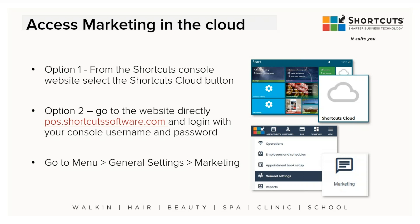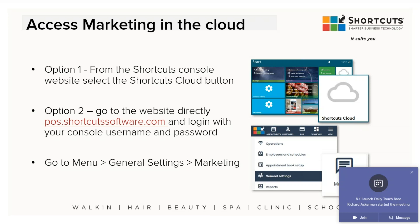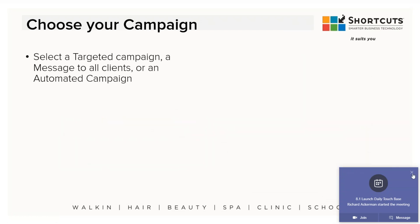There are two ways to get to the cloud. From the Console itself, on the right side, there's a button that says Shortcuts Cloud. Or if you want to bookmark the cloud page itself, you can go to pos.ofsale.shortcutsoftware.com and then use your site ID number. Use the same username and password you use in the Console. Once you're there, at the top of the screen go to Marketing — that's under the menu: General Settings, Marketing.